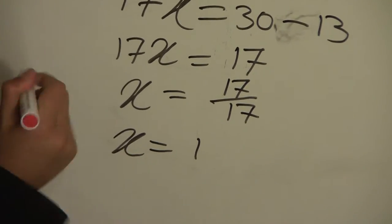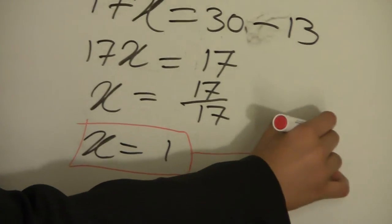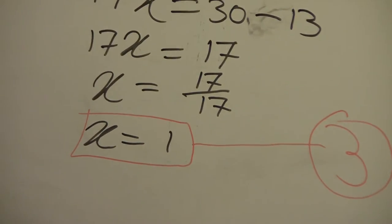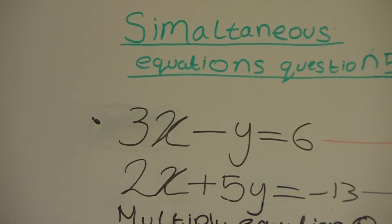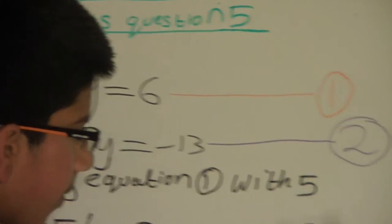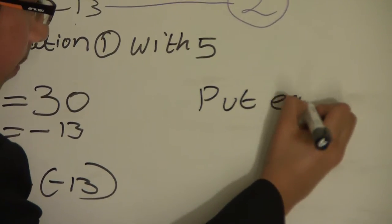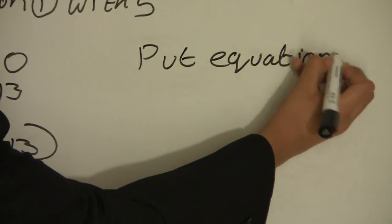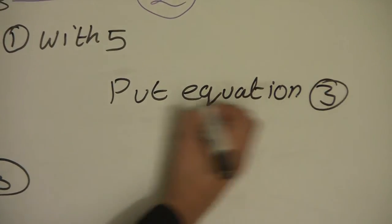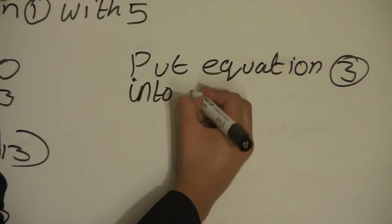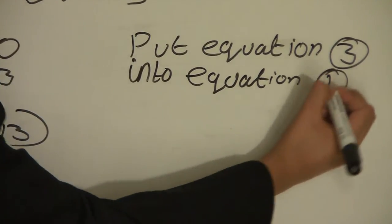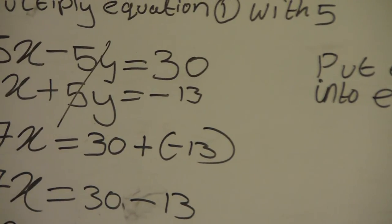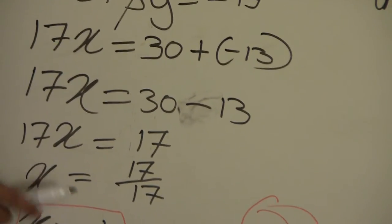This will be labelled equation number 3. Now we will have to put equation number 3 into equation number 1 so we can work out what y is. So we will write: put equation 3 into equation 1. So instead of x, we will write the number 1.